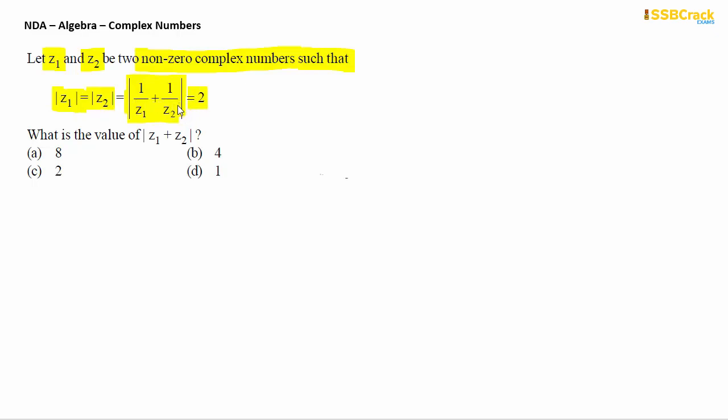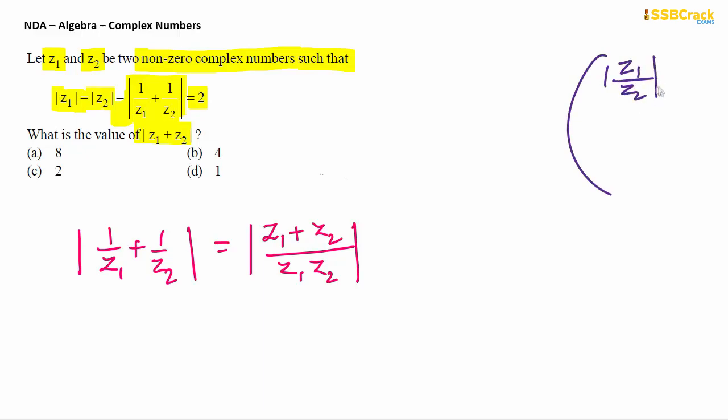This question, as you read and see modulus here, so this can be solved from the property of modulus. You know that 1 upon z1 plus 1 upon z2, this expression of two complex numbers can be simplified to the form modulus of z1 plus z2 divided by z1 z2. And moreover, if you recall the important property that mod of z1 by z2, it is equals to modulus of z1 by modulus of z2.